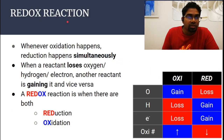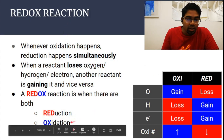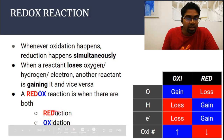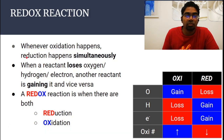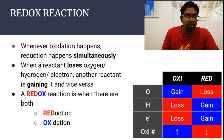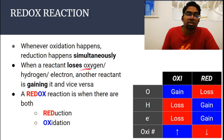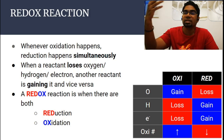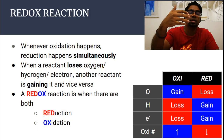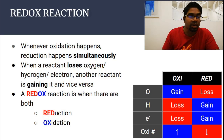A redox reaction is when reduction and oxidation happen together simultaneously. Whenever oxidation happens, reduction will happen simultaneously — if there is reduction, there is definitely oxidation, and vice versa. Think about it like this: when a reactant loses oxygen, hydrogen, or electrons, that oxygen, hydrogen, or electron cannot just disappear. It has to be given to some other reactant. So as one reactant is losing oxygen, another reactant is gaining oxygen. As one reactant is losing hydrogen, another reactant is gaining hydrogen.